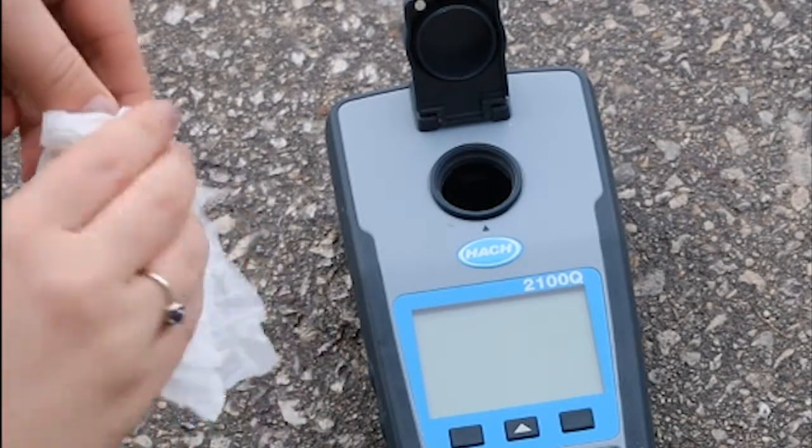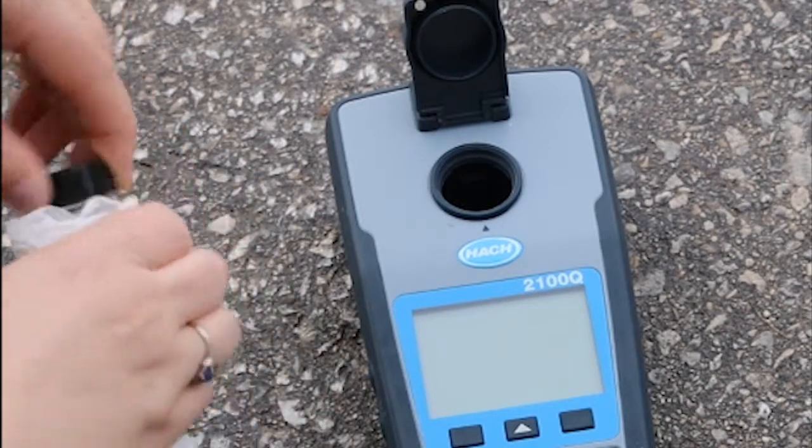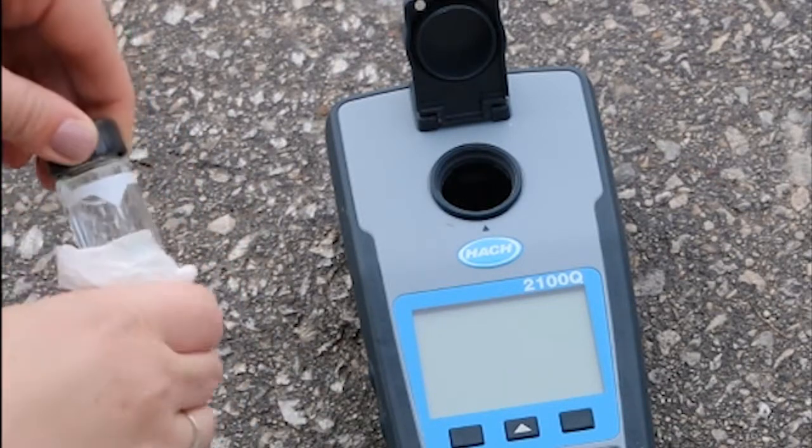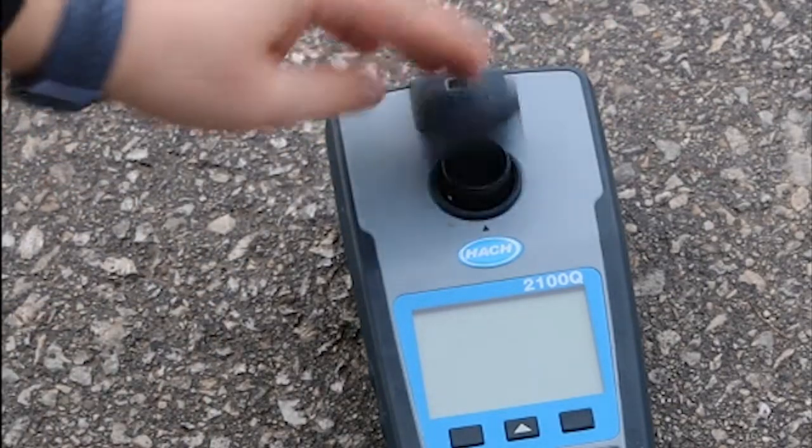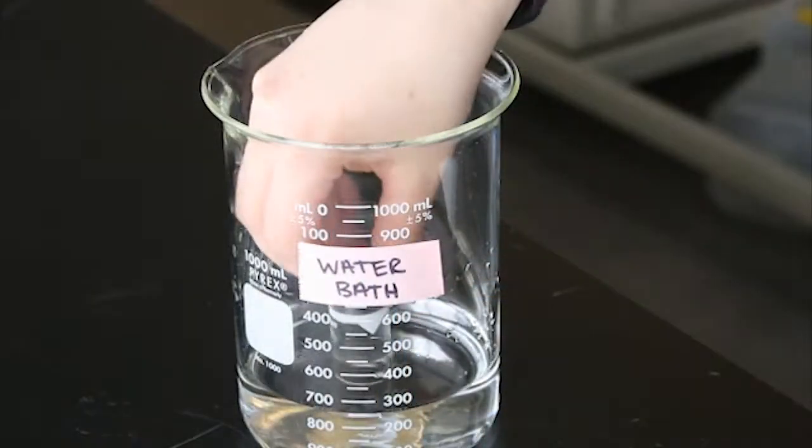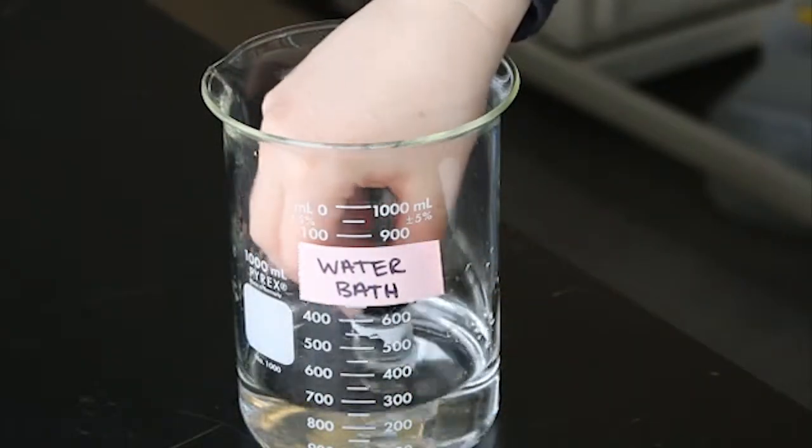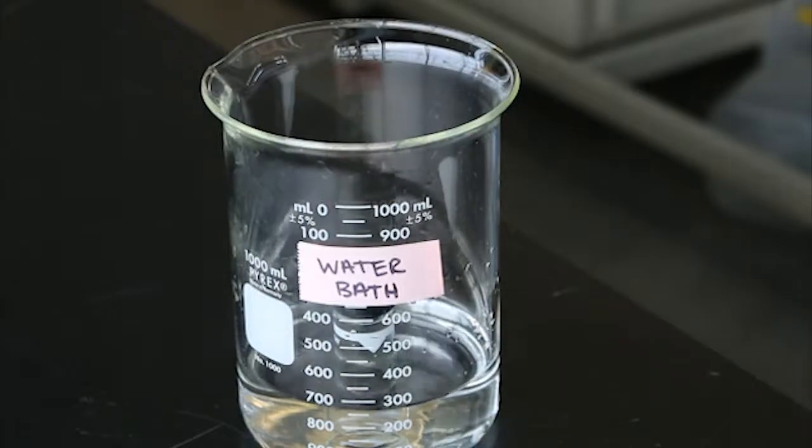Condensation may occur on a cell when a cold sample is being measured in a warm environment. This interferes with the turbidity measurement. If fogging occurs, you can let the sample warm slightly by letting it stand at room temperature or by using a warm water bath.